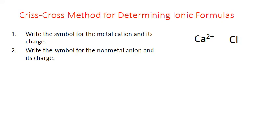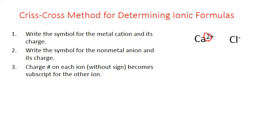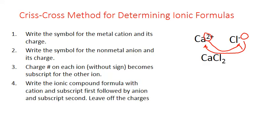This indicates a final formula of CaCl₂. I can also get this formula by crisscrossing the charge numbers: the 2 on the calcium becomes the subscript on the chlorine, and the implied 1 on the chlorine becomes the subscript on the calcium — but subscripts of one are always assumed and not written. Bringing the symbols together and leaving off the pluses and minuses gives CaCl₂, since it's an electrically neutral unit overall.